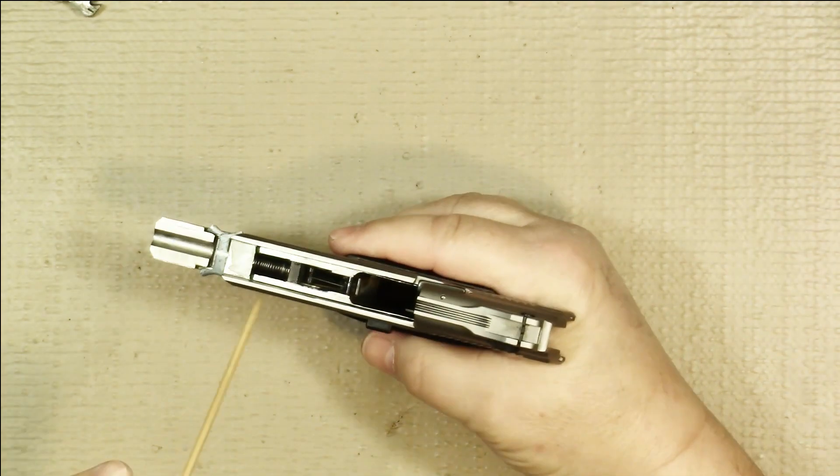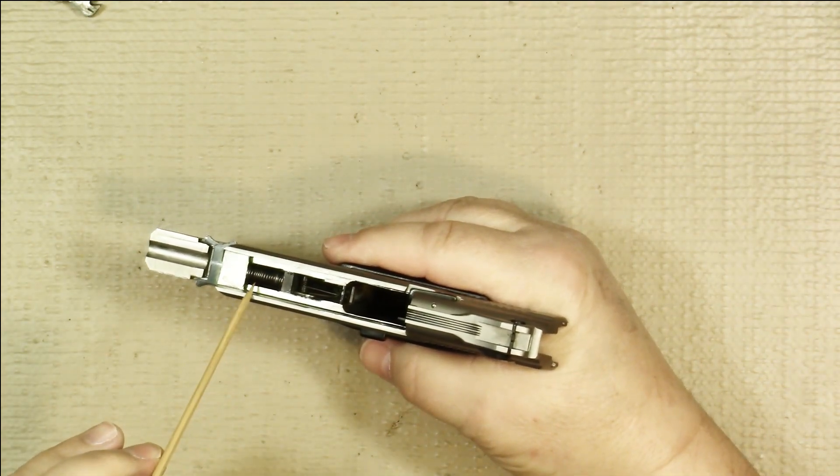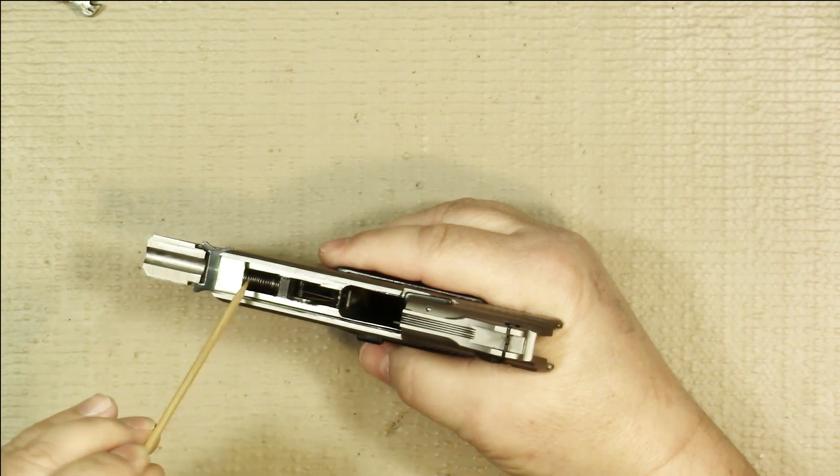Now you can see there the spring is compressed, the recoil spring, and that holds it in position.